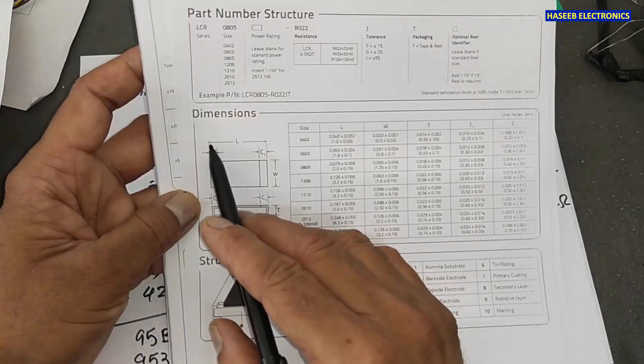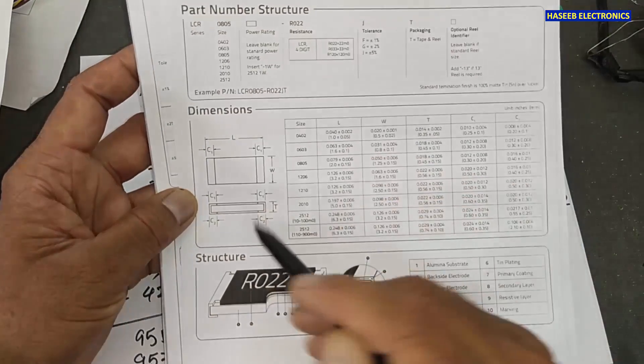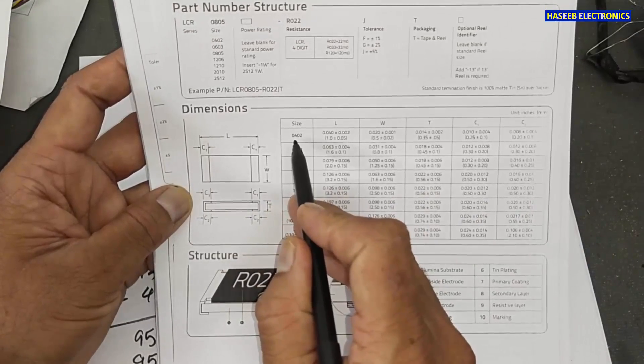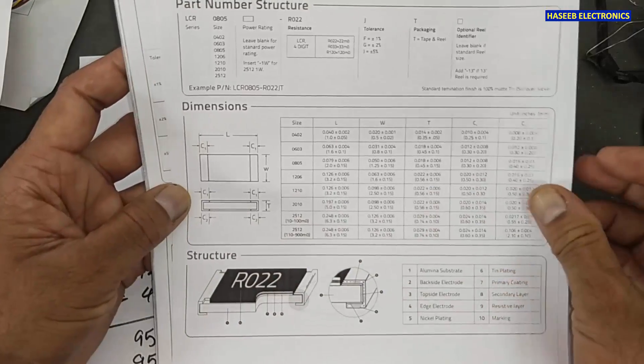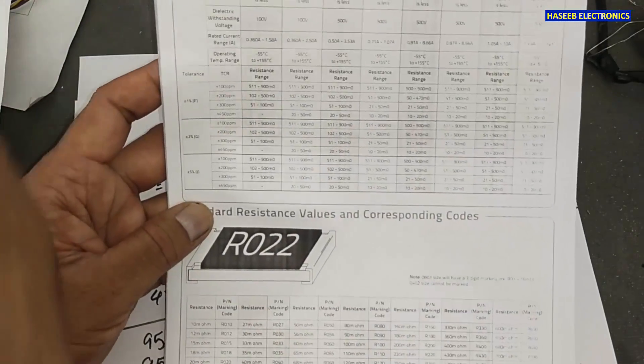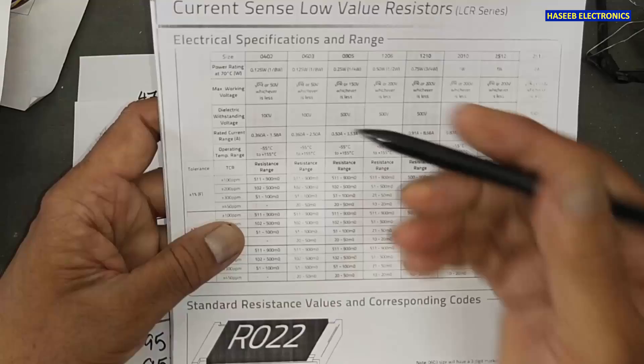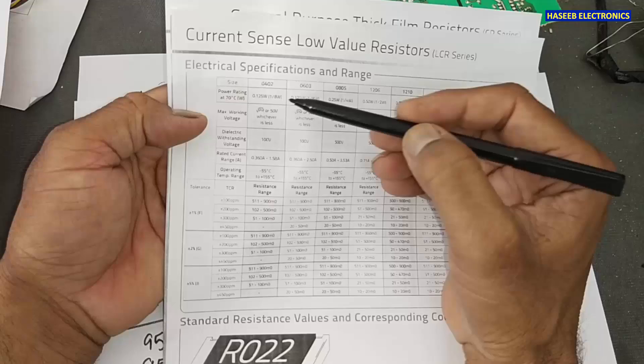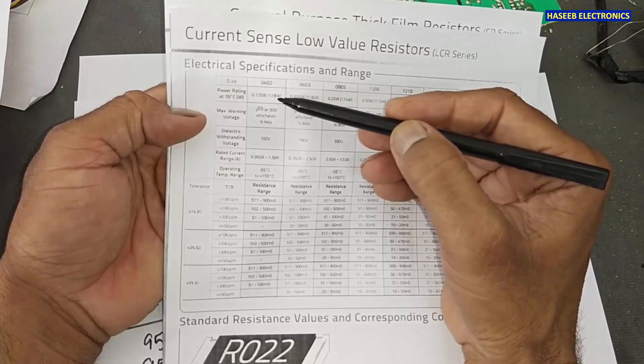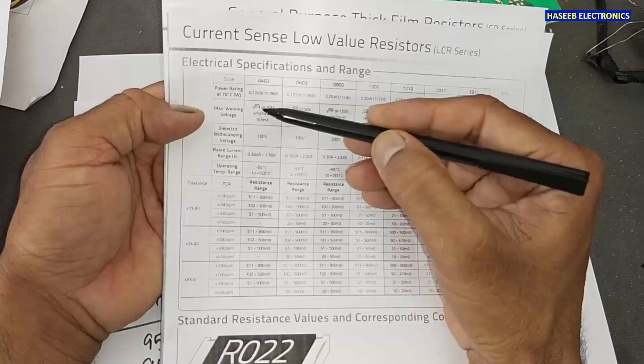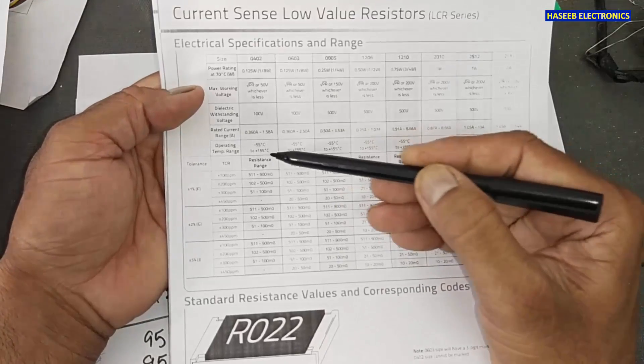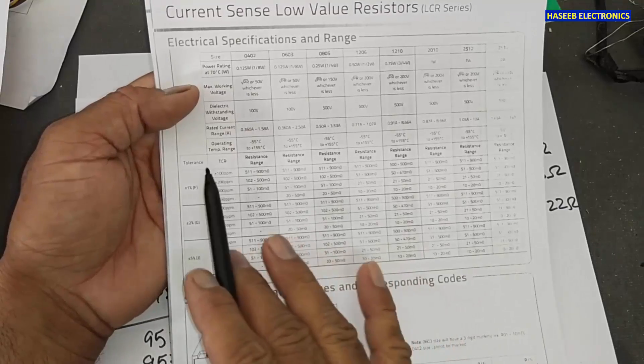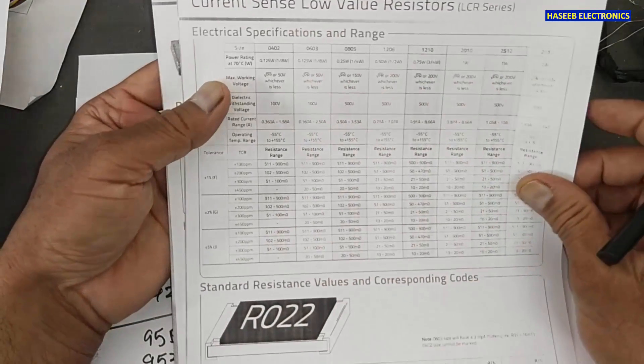The same way we will take length, width and thickness. And we will locate the model number. Package number 0402. When we will reach 0402, we will see power rating. It is 0.125 watt or 1 over 8 watt. Working voltage. This is the rated current and temperature. And these are the resistor values. Tolerance, temperature coefficient, everything we will find here.